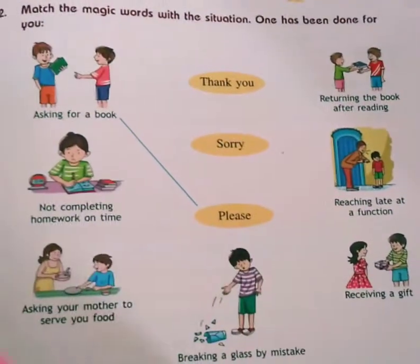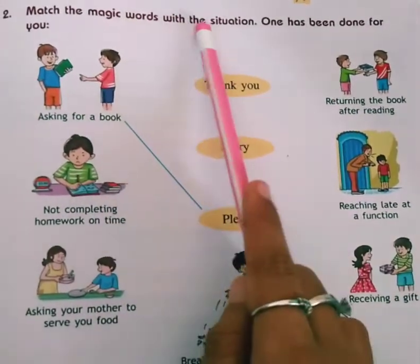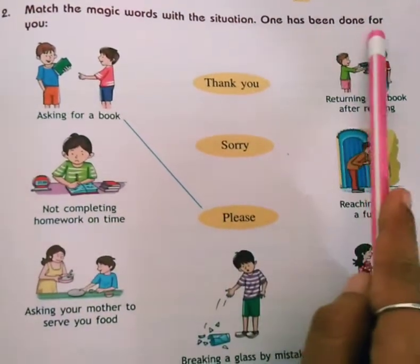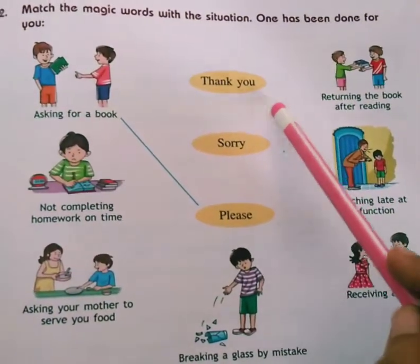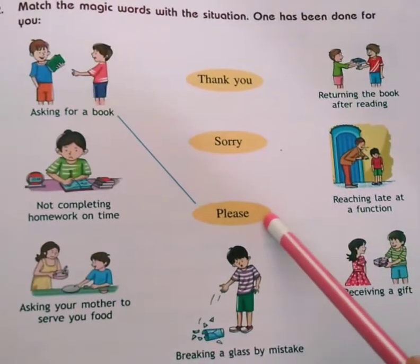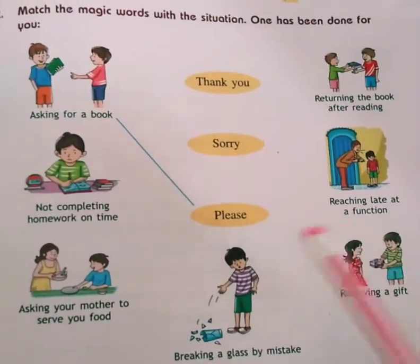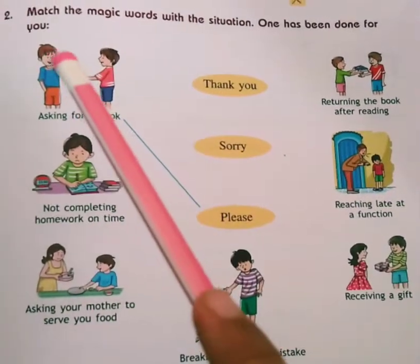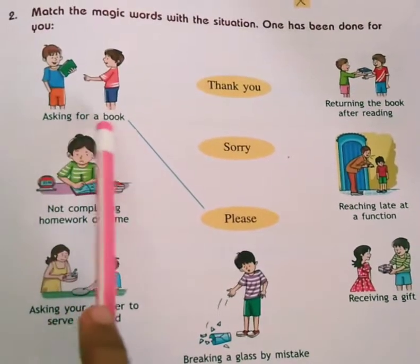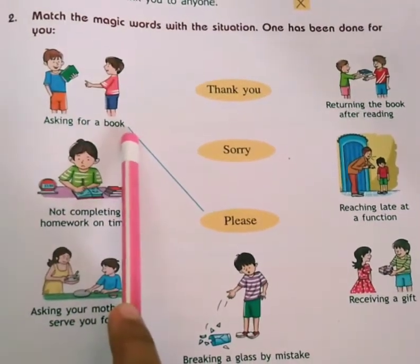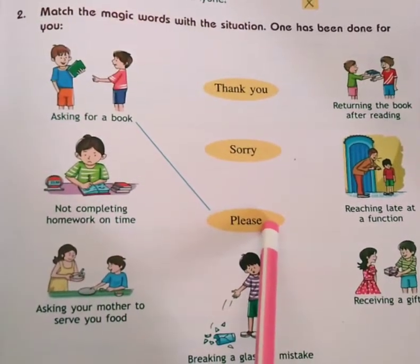Now question number 2: match the magic words with the situation — one has been done for you. The three magic words are: thank you, sorry, and please. You have to match the magic word with the situation. For example, 'asking for a book' — if you are asking for a book from someone, you will say please. So we have matched it with please.